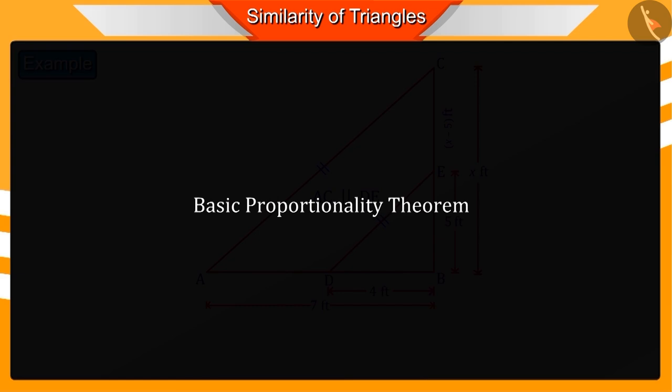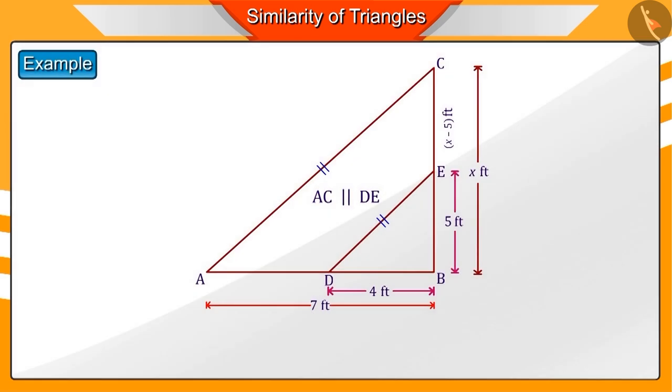For this we can use the basic proportionality theorem, according to which if a line is drawn parallel to one side of a triangle to intersect the other two sides in distinct points, then the other two sides are divided in the same ratio.